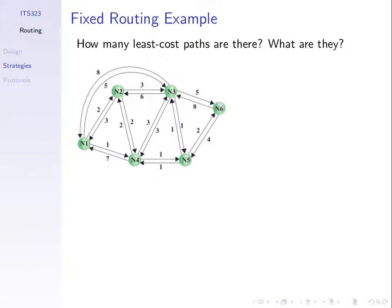Routing is about finding a path to deliver data from source to destination. Using an example network, we want to find the least cost paths or least cost routes from a source to a destination. When we send data, we want it to travel across the path which costs the least amount. With both fixed and adaptive routing, we need to learn about the network and then calculate the least cost paths.